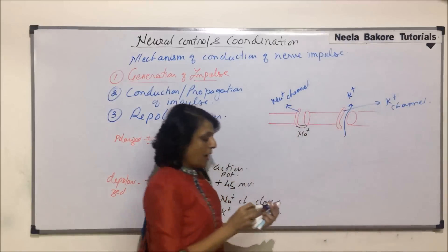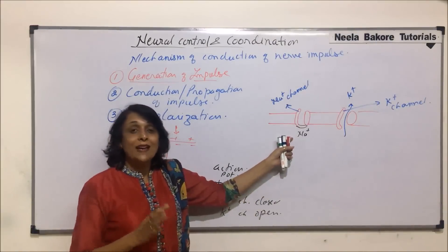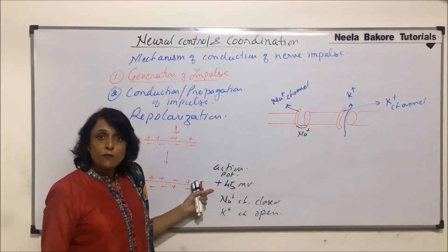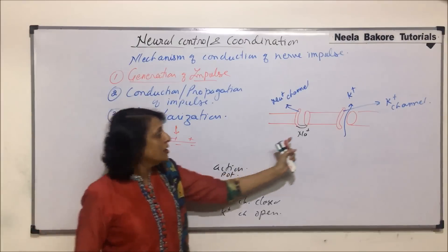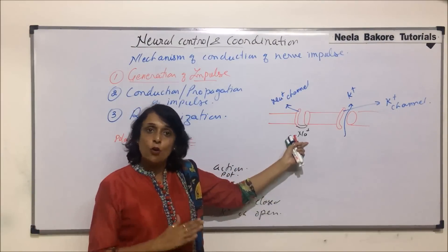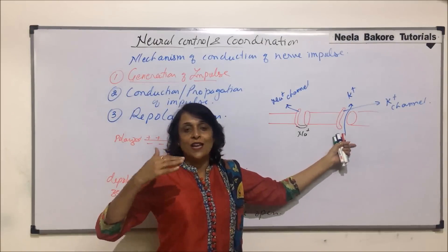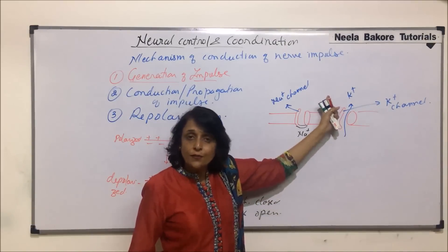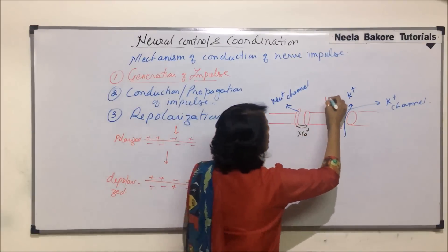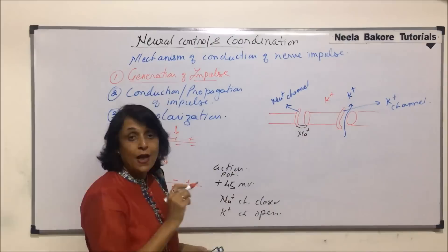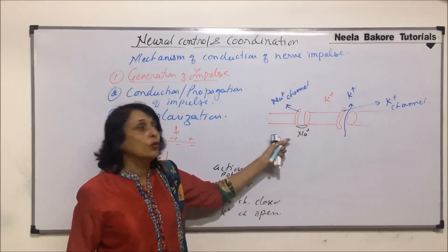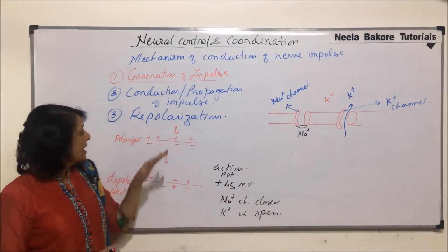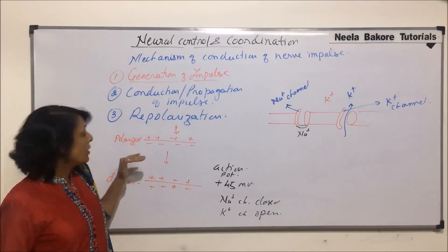At this stage, when sodium channels close — these channels are regulated by voltage — at plus 45 millivolts, which is action potential, sodium channels close and potassium channels open. All those potassium ions which were inside start moving out. The outside of the membrane again gets more and more positively charged ions and it becomes electropositive, but this is electropositive due to potassium ions, not because of sodium ions.